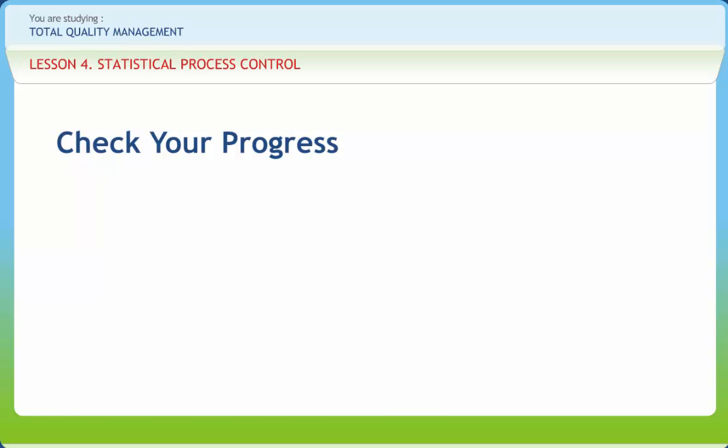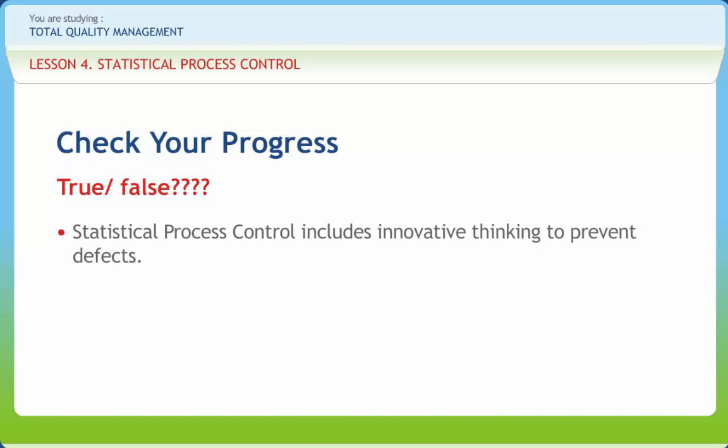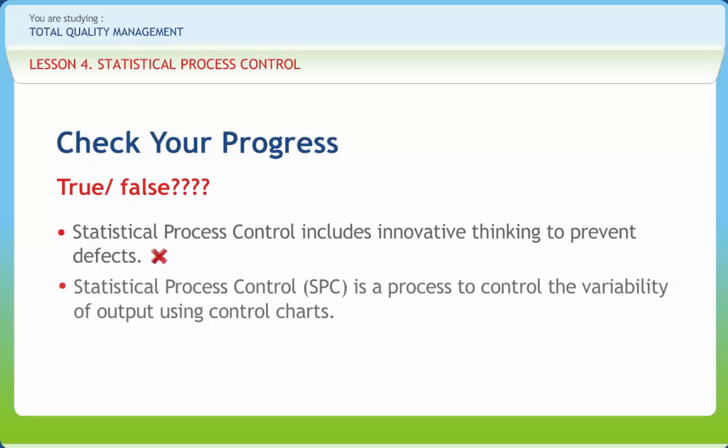Now let us check if we have understood the various concepts discussed in this lesson clearly. Statistical process control includes innovative thinking to prevent defects. Right or Wrong? Wrong. Statistical process control SPC is a process to control the variability of output using control charts.